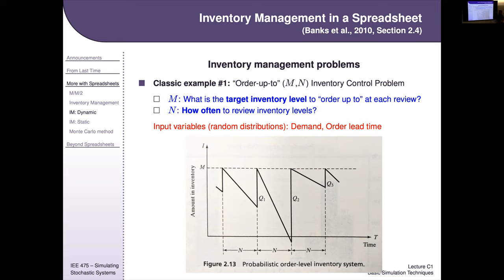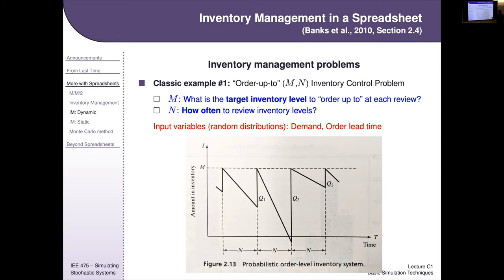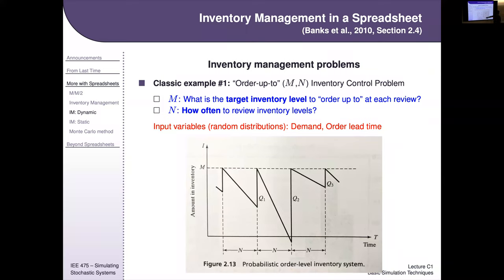Negative inventory in this model represents when demand exceeds supply — a backorder situation. Customers may have left to go elsewhere, or they've committed to the order but won't pay until the product arrives. We can penalize negative inventory in our metrics to optimize the policy. How to handle negative inventory is application-specific, but it's a common way to model when demand exceeds supply.